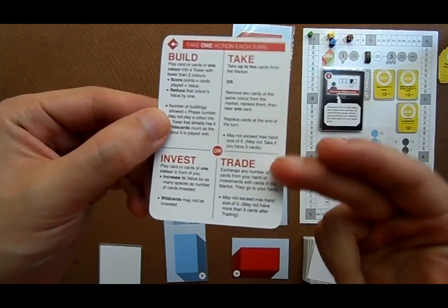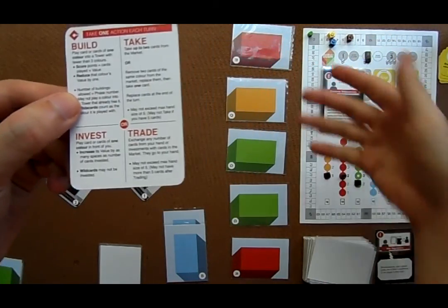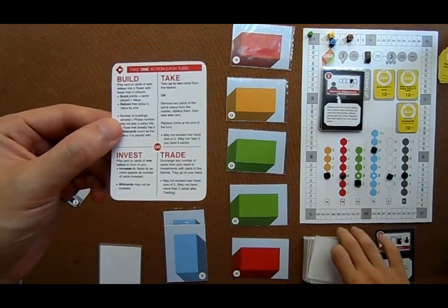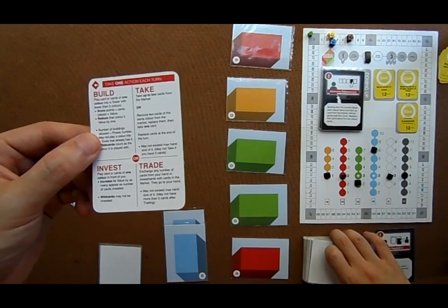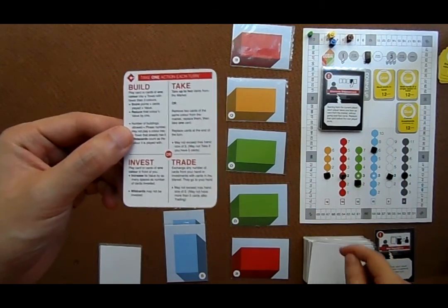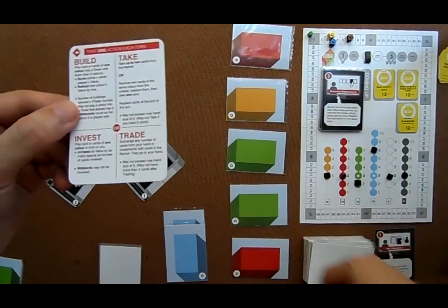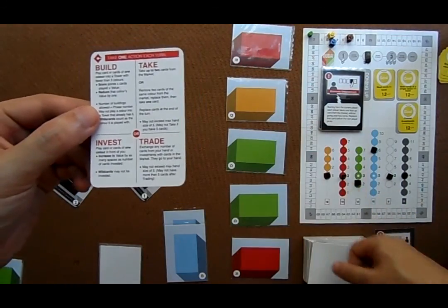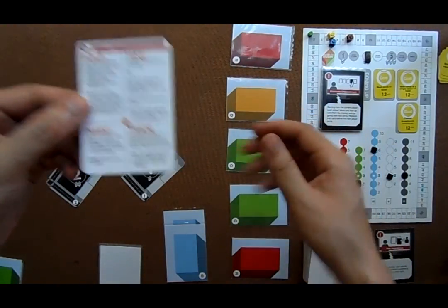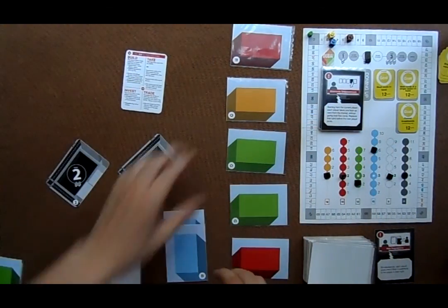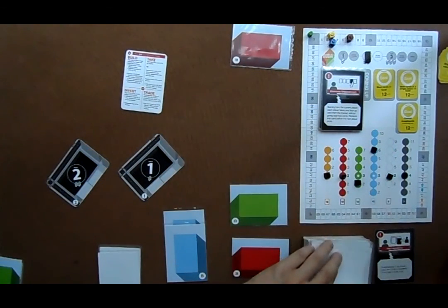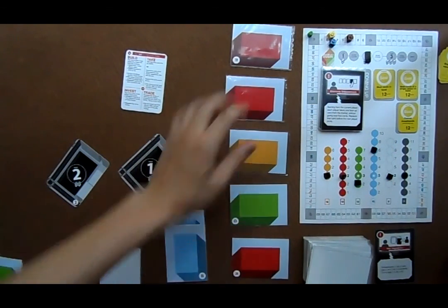The rest is take and trade. When you take, you take up to two cards from the market, or the face-up market, or the deck, the top card of the deck, after which you replenish the market from the top of the deck, if there are holes. So if I take and take action, I take these two cards, and I replenish them from the deck like so.